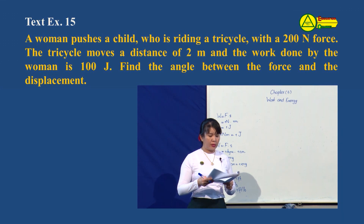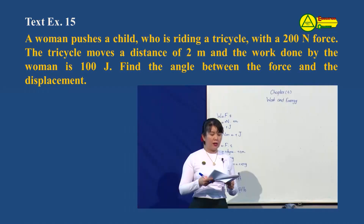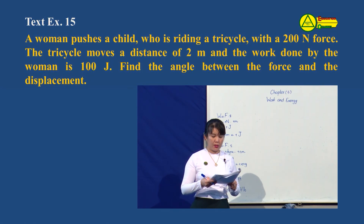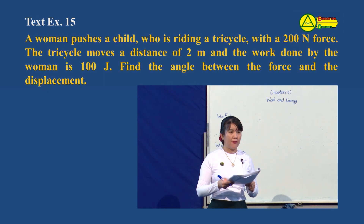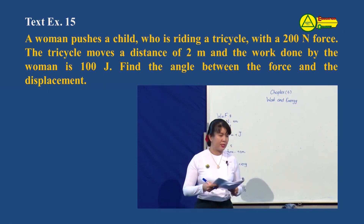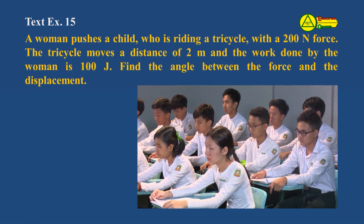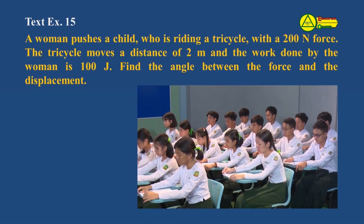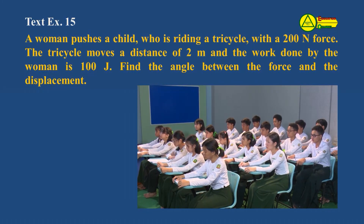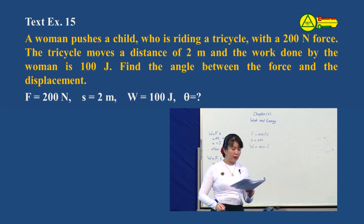Let's go to slide number 15. A woman has a child who is riding a tricycle with a 200 N force. The tricycle moves a distance of 2 m and the work done by the woman is 1 Nm. Find the angle between the force and their displacement. F equals 200 N, displacement equals 2 meters. Find the level between the force and the displacement.